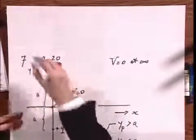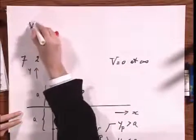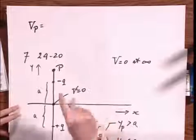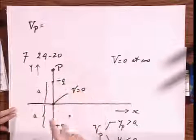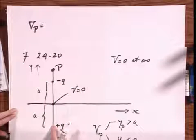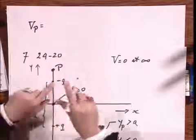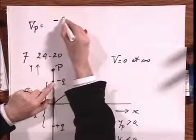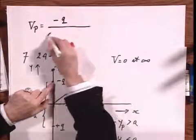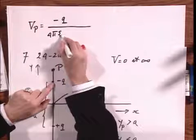then the potential at that point P, it's a scalar, is the sum of the potential due to this point and the sum of the potential due to this point. Let's first do this one. So that equals minus q divided by 4 pi epsilon zero.